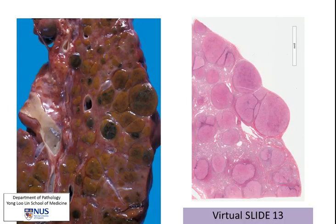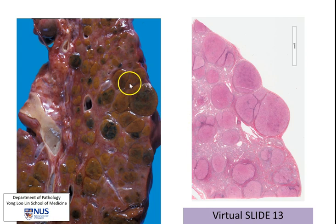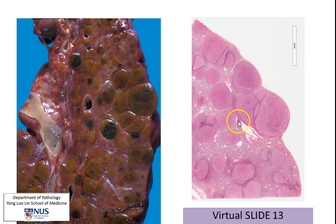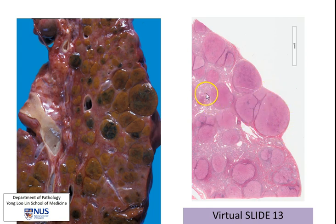We're going to have a look at the microscopic appearance. This is the cut surface. You can see the nodularity, and at very low power you can see the nodules of regenerating hepatocytes separated by fibrous septa.